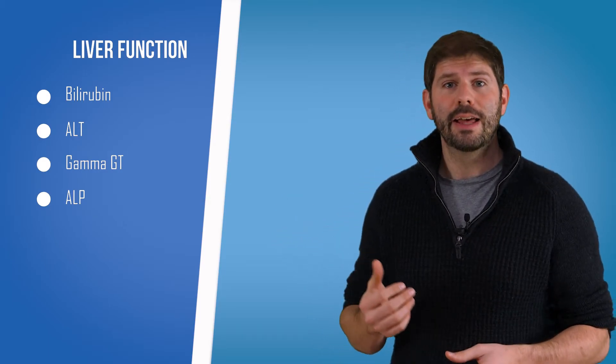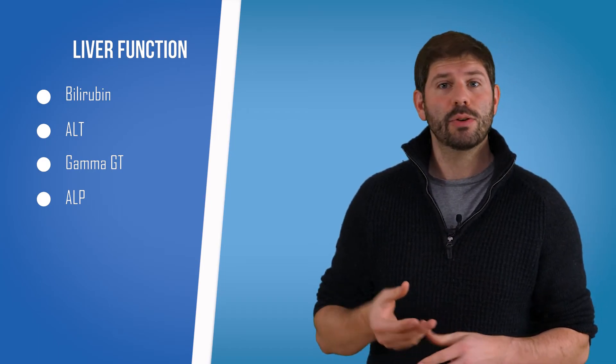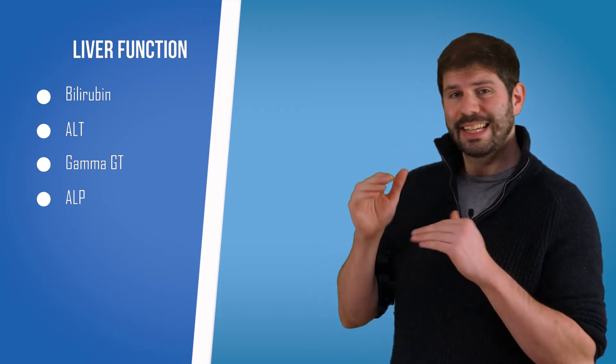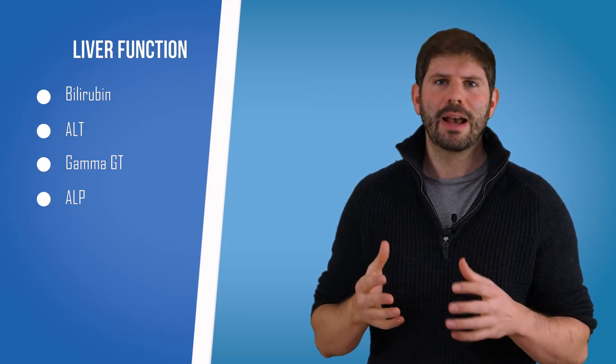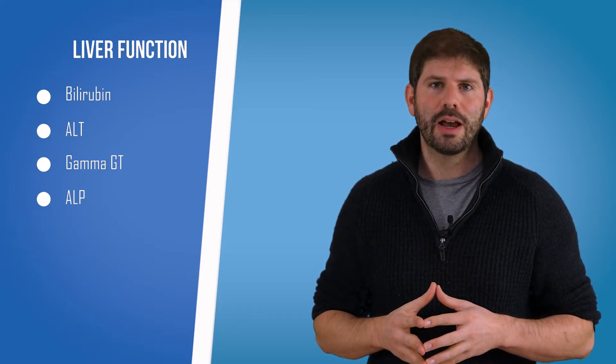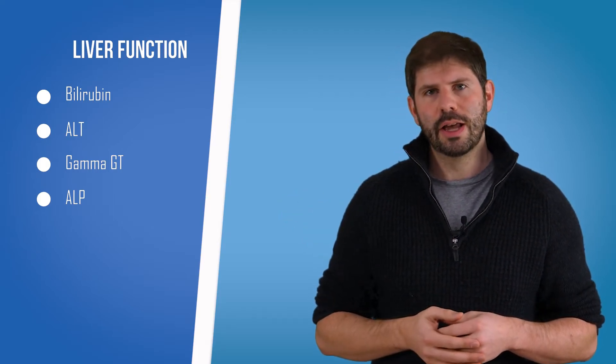For example, just like ALT, something like fatty liver disease or maybe if you drink a lot of alcohol, these enzymes both go up. It can give you a good idea of the fact that maybe you need to modify your lifestyle a bit to improve your long-term health.